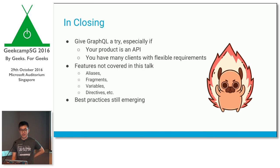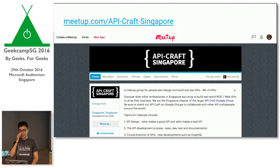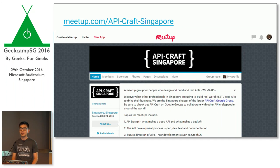In closing, give GraphQL a try. I think it's pretty interesting, especially if your product is an API or if you have many clients with flexible requirements. I deliberately didn't cover many features of GraphQL because these are mostly syntax sugar — the core idea is the same. And because GraphQL is still pretty new, best practices are still emerging. If you're interested in all things APIs — API design, API development processes, and new technologies like GraphQL — do check out the meetup group API Craft Singapore.